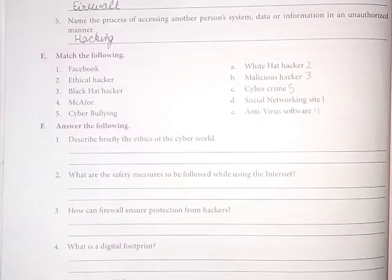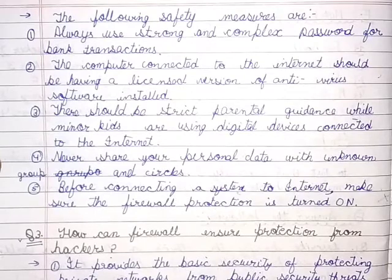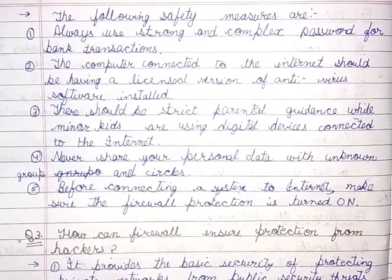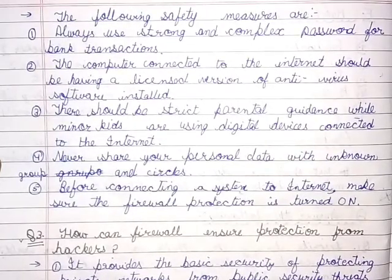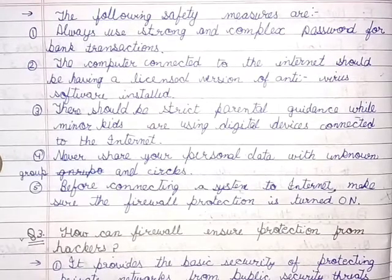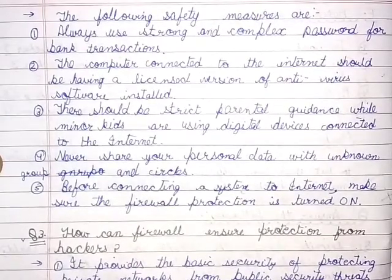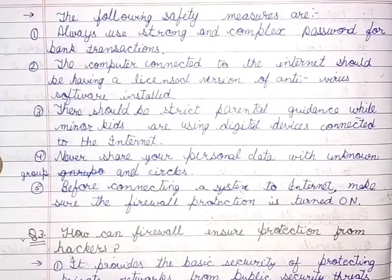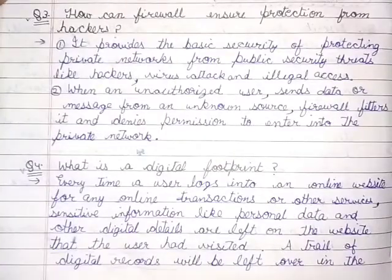Question 2: What are the safety measures to be followed while using the internet? Answer: First, always use strong and complex passwords for bank transactions. Second, the computer connected to the internet should have a licensed version of anti-virus software installed. Third, there should be strict parental guidance while minor kids are using digital devices connected to the internet. Fourth, never share your personal data with unknown groups and circles. Fifth, before connecting a system to the internet, make sure that the firewall protection is turned on.